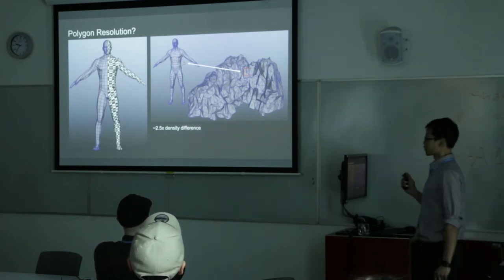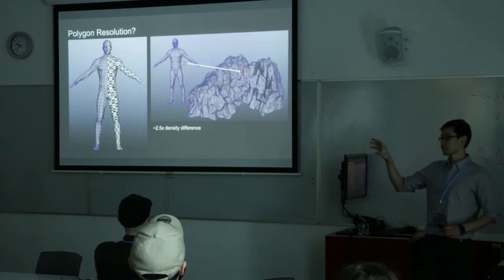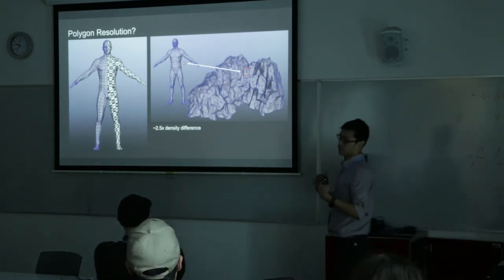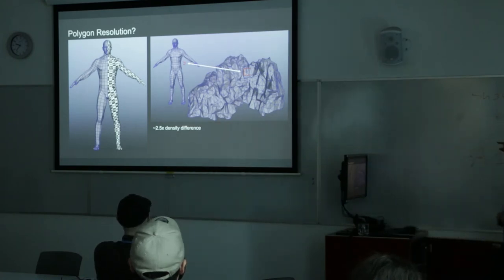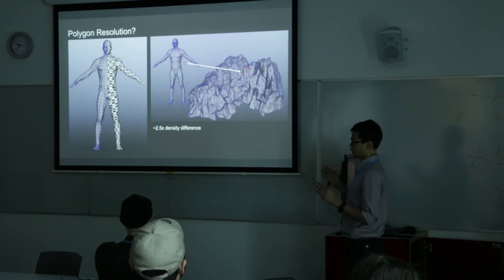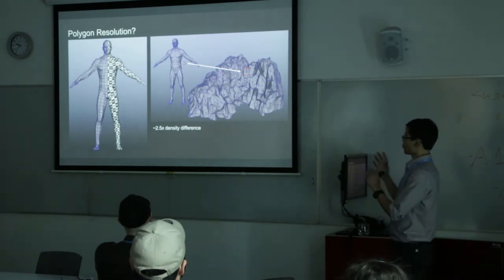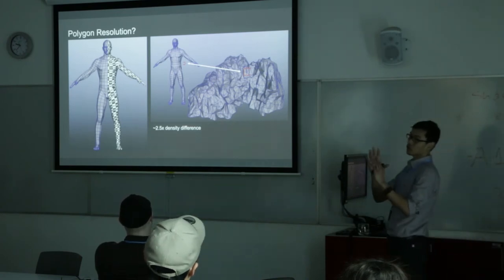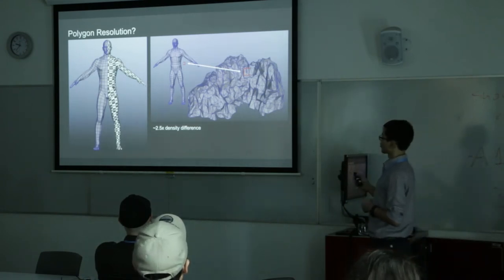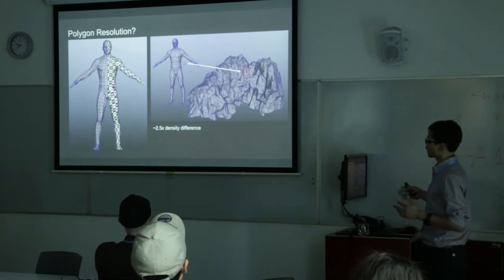We all know about texture resolution, but there's also polygon resolution. When you look at a character, if you're a character modeler you typically give the eyeball more resolution than the face, and the face more than the body. The idea of polygon resolution is something you may want to use when you don't know what scale to work at — say for a mobile game. You can use your hero character as a reference: everything else should be much lower resolution than the hero character.